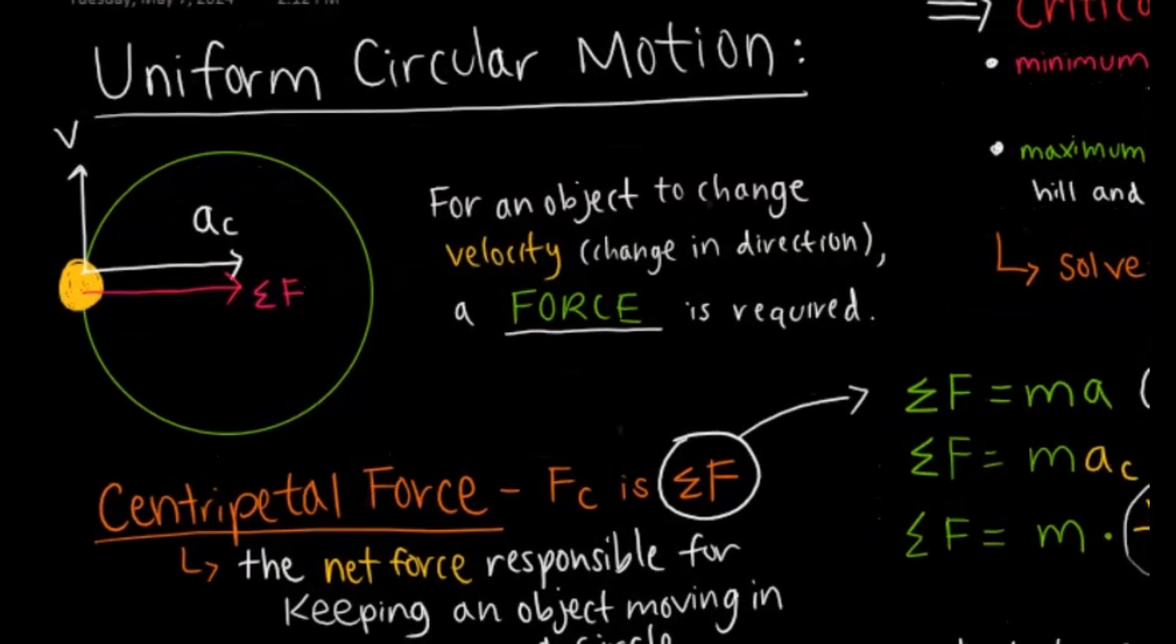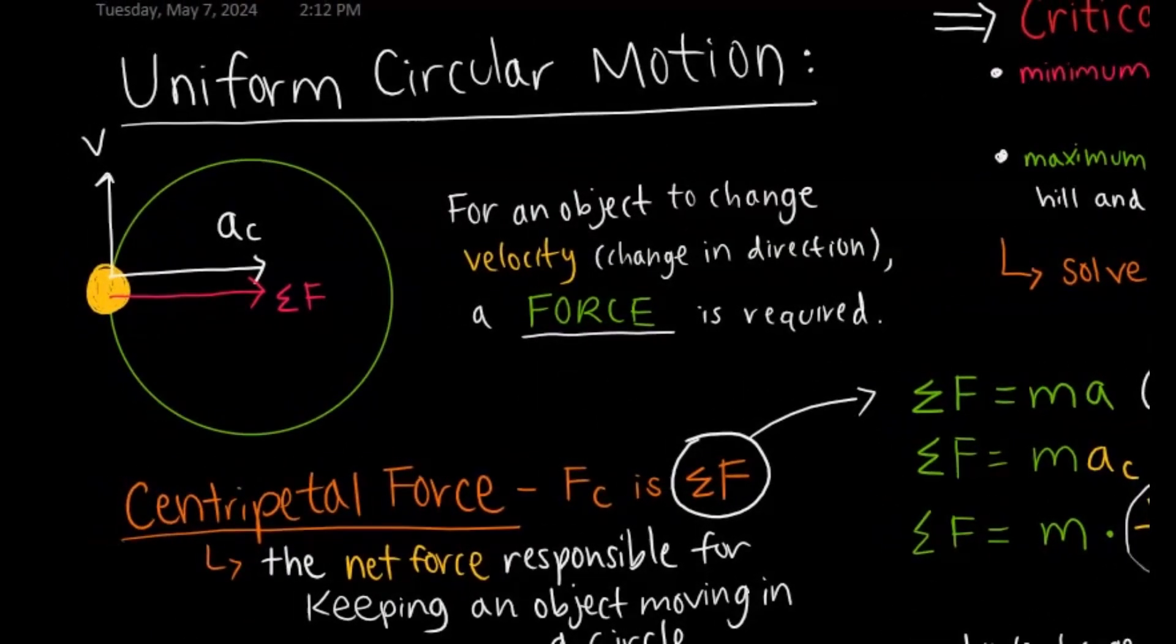Essentially, whenever you have objects that are moving in a circle, in order for that to happen, you're going to have what is called a centripetal force. So they're going to have a change in direction, they're constantly changing direction, and therefore their velocity is always going to be changing.